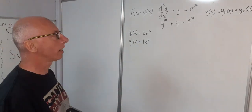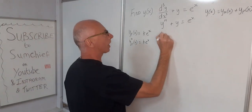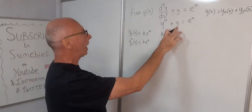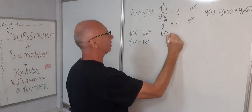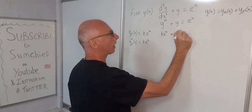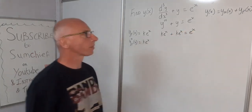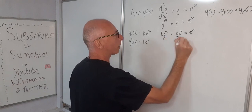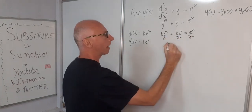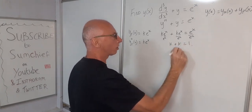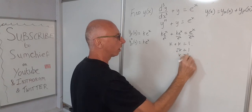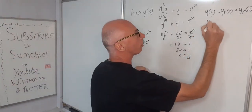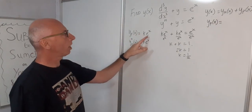Now all we've got to do is plug that into the equation and do matching coefficients. So k·e^x for our third derivative plus k·e^x for y equals e^x. Dividing through by e^x gives us k + k = 1, so 2k = 1, therefore k = 1/2. So our particular solution is y_p = (1/2)e^x.